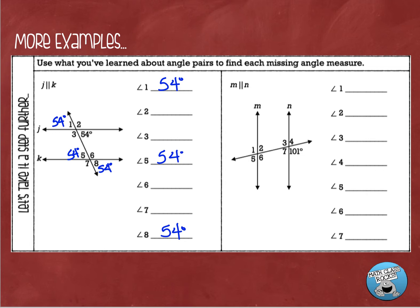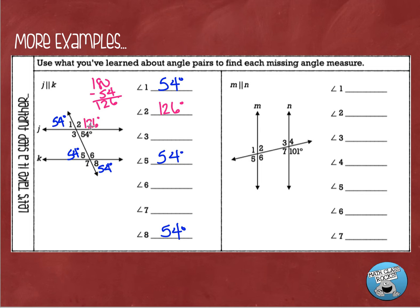To figure out the other angles, remember that straight lines always equal 180 degrees. So for angle 2, take 180 minus 54 to get 126 degrees — these are supplementary angles. Angle 3 will also be 126 because they are vertical. Once I know angle 2 is 126, angle 6 is also 126 because they are corresponding, and also because it's alternate interior with angle 3.